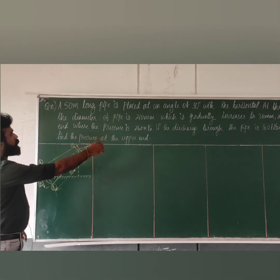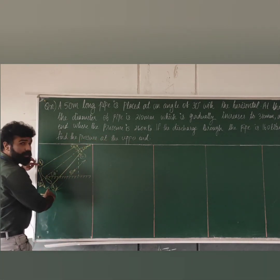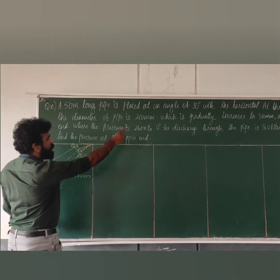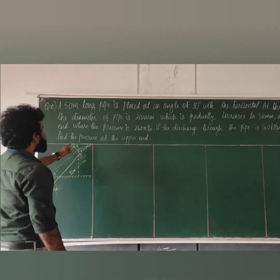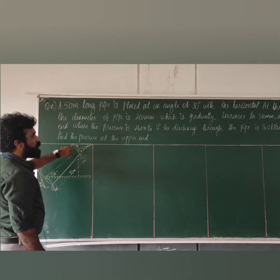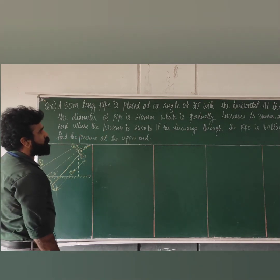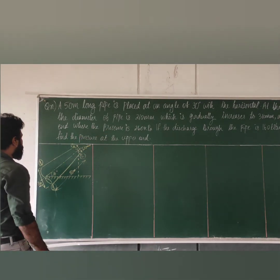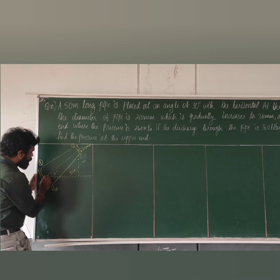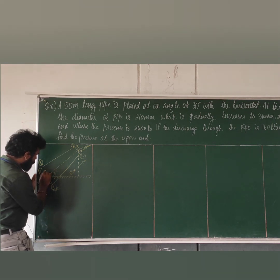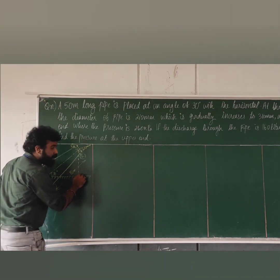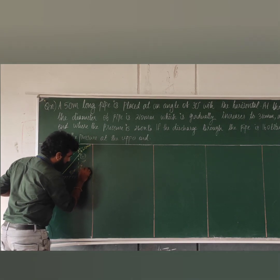The upper end diameter is 210 mm and the lower end diameter is 310 mm. The pipe length is 50 meters and the inclination is 30 degrees. The lower end pressure is 260 kilopascal. The upper end point is labeled as 2 with diameter 210 mm, and the lower end point 1 with diameter 310 mm. Point 210 mm corresponds to z1.